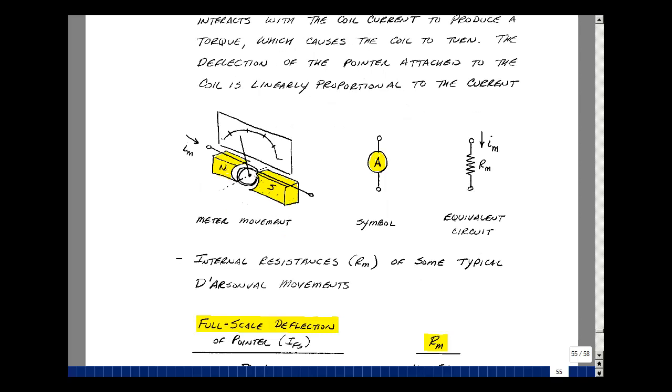The D'Arseneval meter is a device used to measure voltage or current. It's a coil mounted between poles of a permanent magnet so it's free to rotate. The magnet produces a magnetic field that interacts with the coil current to produce a torque which causes the coil to turn. The deflection of the pointer attached to the coil is linearly proportional to the current.